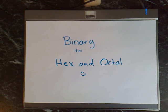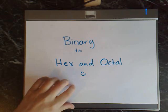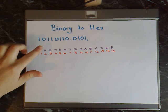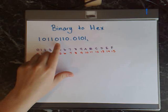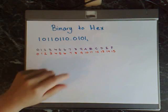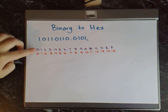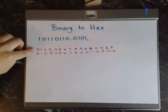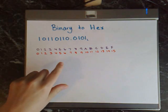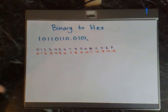Hi there. In this tutorial I'm going to show you how to go from binary to hexadecimal and octal. So for the first example I'm going from binary to hexadecimal, and the number I'll be using is 101 101 10.0101. In the purple here I have the hexadecimal number system and just beneath it I have the decimal equivalence, and you'll see why we need that later on.